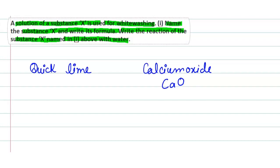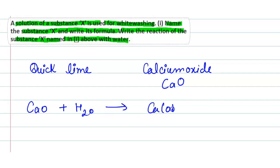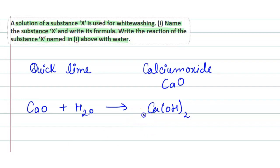The second part is to write the reaction of substance X with water. Calcium oxide plus water gives calcium hydroxide, Ca(OH)₂. Its scientific name is slaked lime.